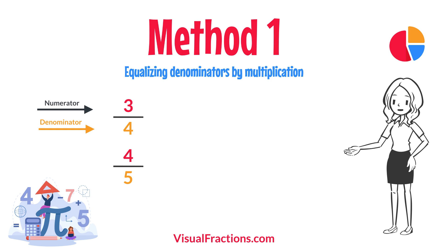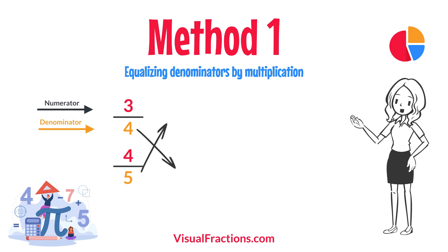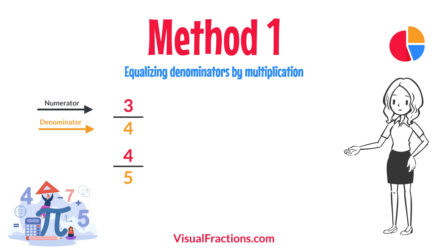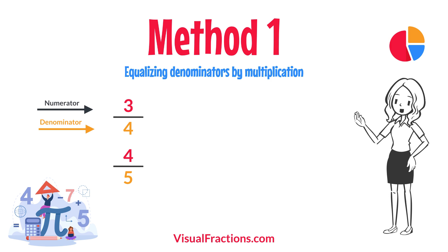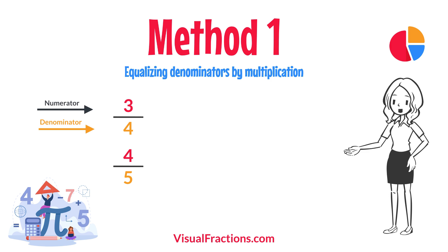First, let's equalize the denominators by multiplying each fraction's numerator and denominator by the other fraction's denominator. This method works by using the denominators of each fraction to create a common denominator, allowing us to compare the fractions directly.